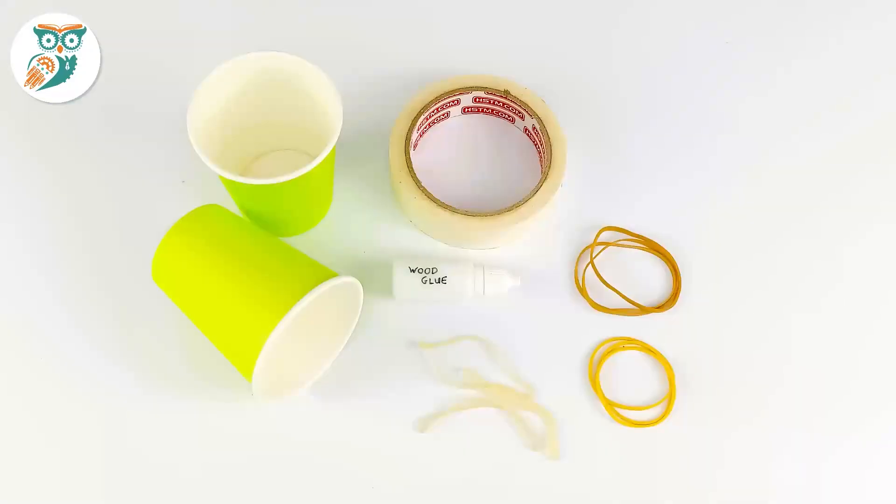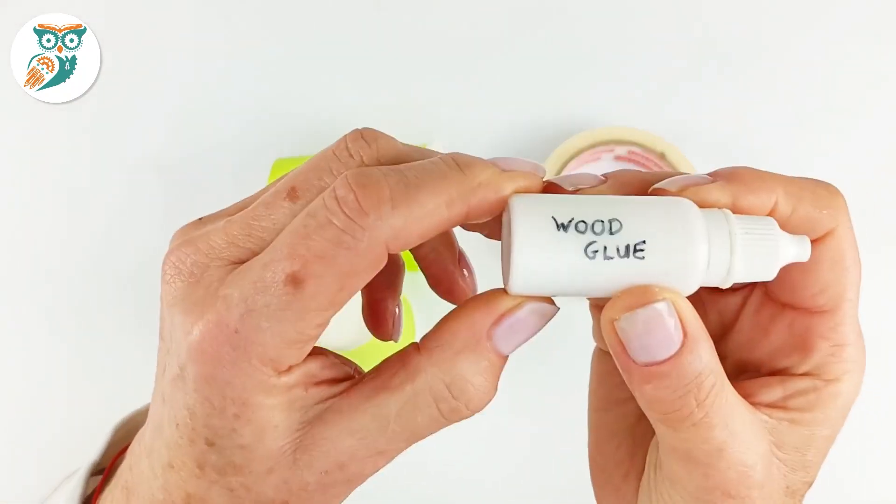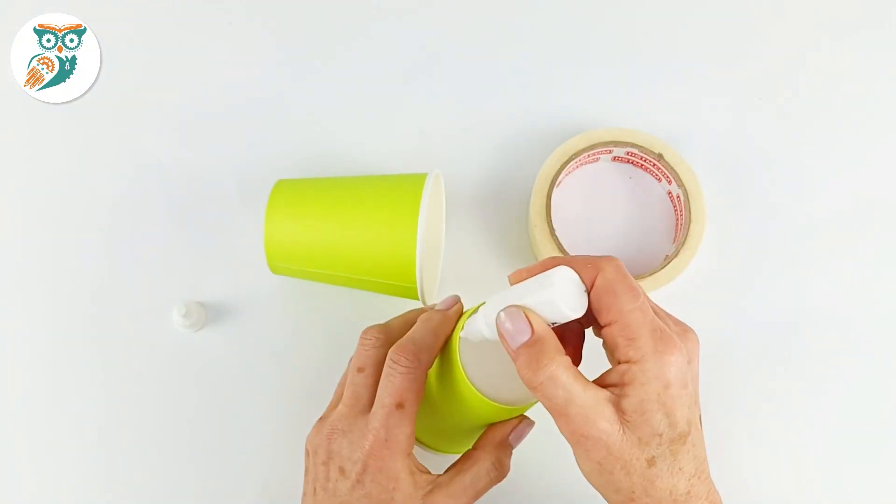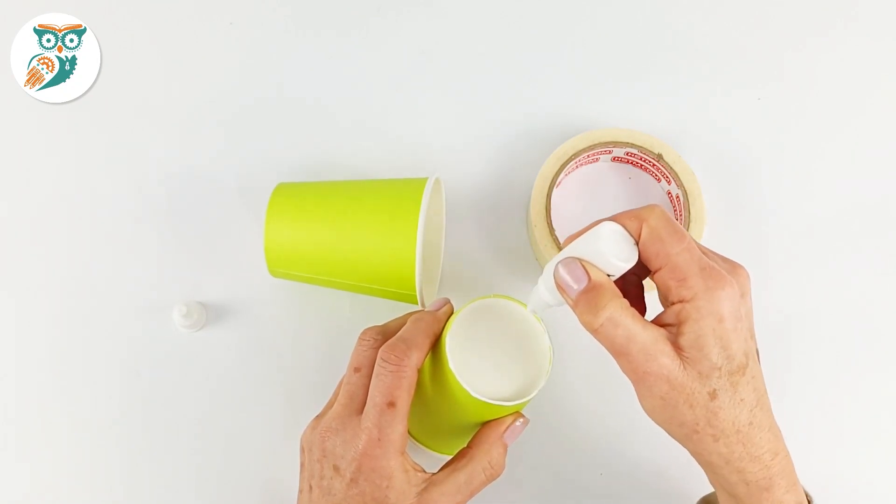So first we're going to gather up our supplies. All you need is a couple of cups, some glue, tape, and rubber bands. You can use different types of rubber bands and different types of cups so you can test the different styles and see which one you think works the best.